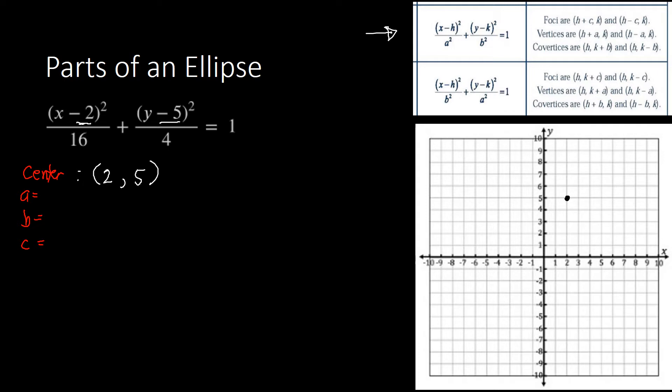Here, a is the distance from the center to the vertex, b is the distance from the center to the co-vertex, and c is the distance from the center to a focus. The bigger denominator is our a squared — since 16 is bigger than 4, a squared equals 16, so a equals 4. The smaller denominator is b squared, so b squared equals 4 and b equals 2.